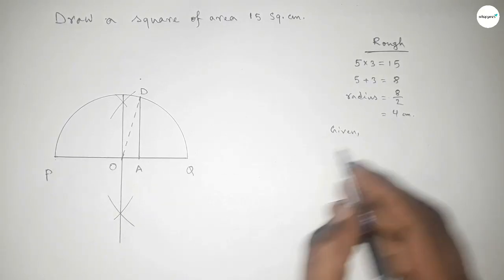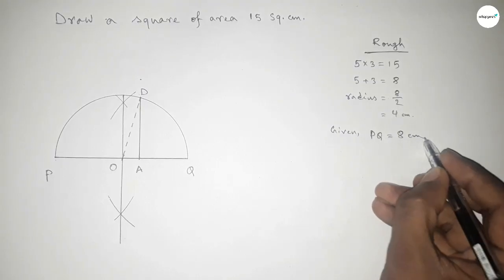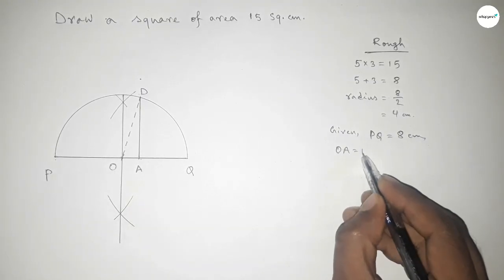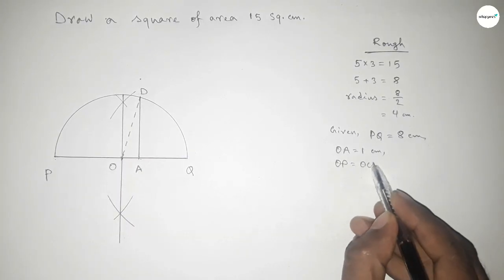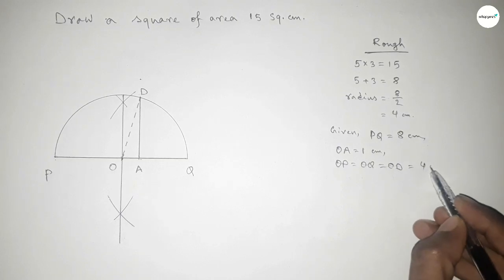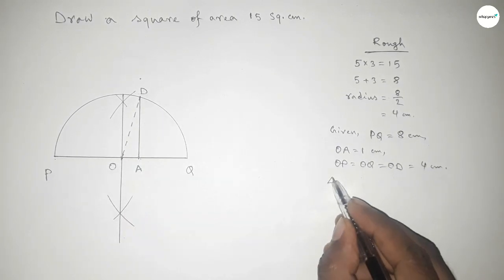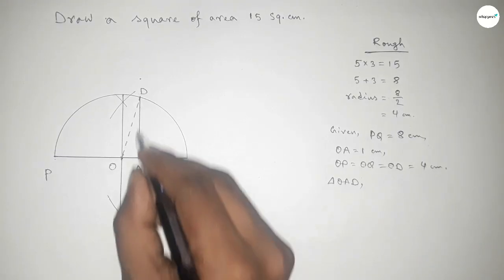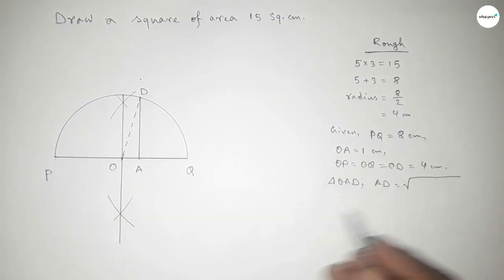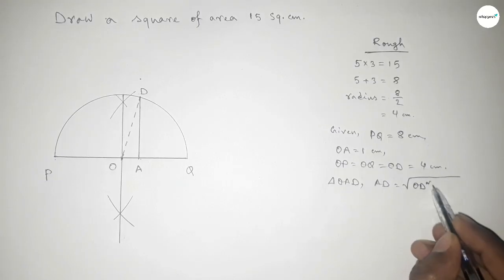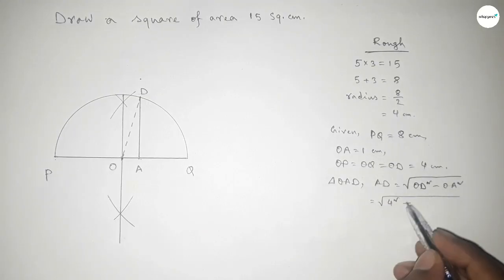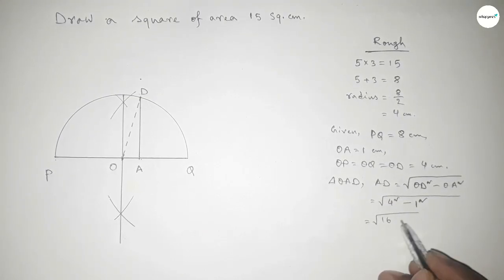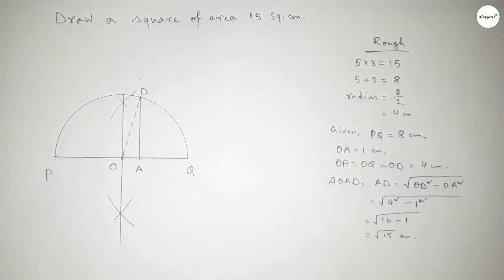Now roughly discussing some calculations. Given: PQ equal to 8 centimeters, OA equal to 1 centimeter, and radius OD, OP, and OQ equal to 4 centimeters. From right angle triangle OAD, by Pythagoras theorem: AD equals the square root of hypotenuse squared minus base squared, which is root of OD squared minus OA squared, equal to root of 4 squared minus 1 squared, equal to root of 16 minus 1, so AD equal to root 15 centimeters.